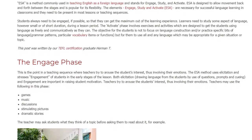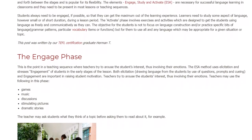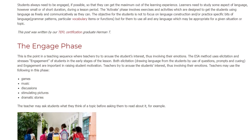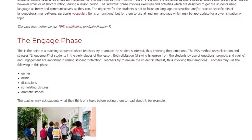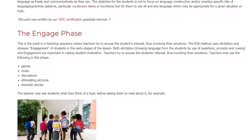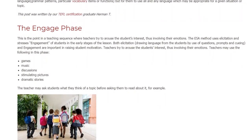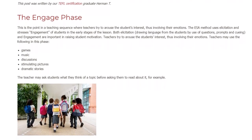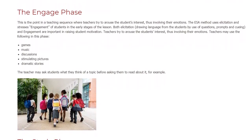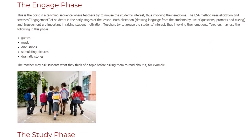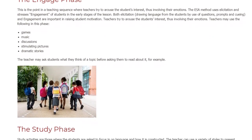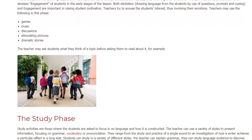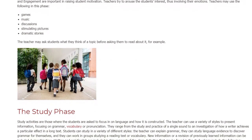The engage phase is the point in a teaching sequence where teachers try to arouse the students' interest, thus involving their emotions. The ESA method uses elicitation and stresses engagement of students in the early stages of the lesson. Both elicitation — drawing language from the students by use of questions, prompts, and cueing — and engagement are important in raising student motivation. Teachers may use games, music, discussions, stimulating pictures, or dramatic stories in this phase.